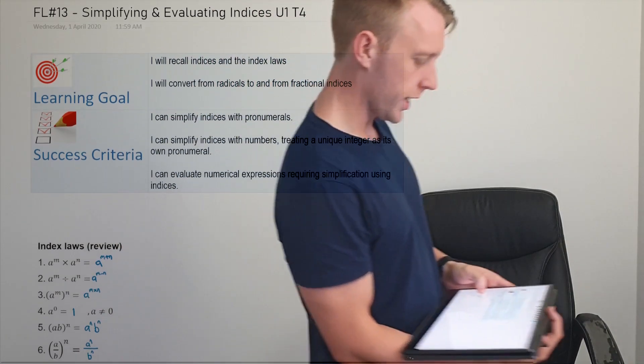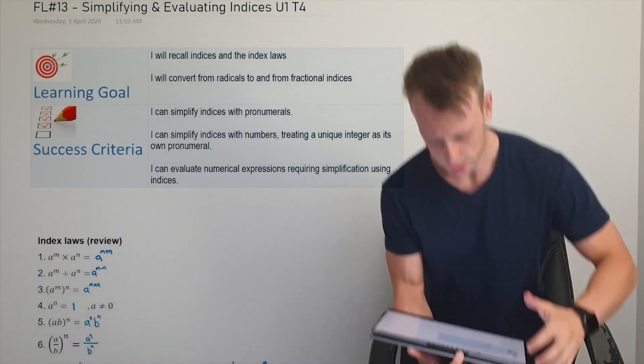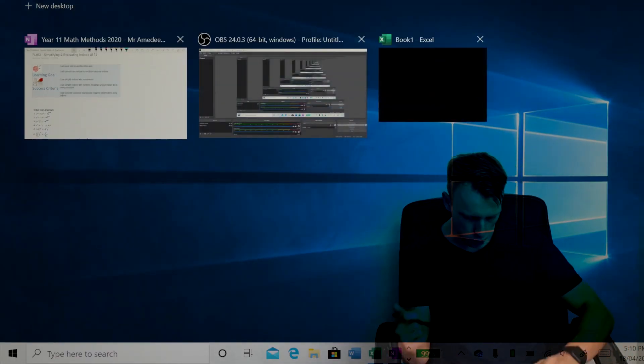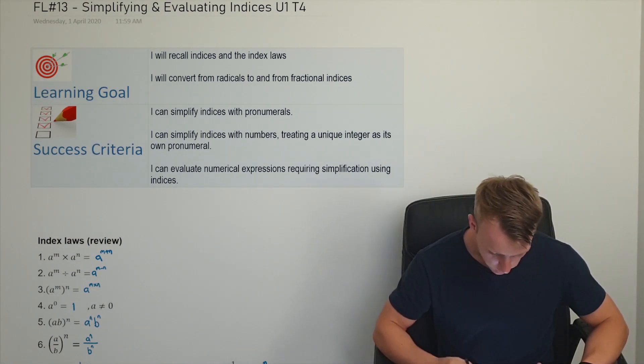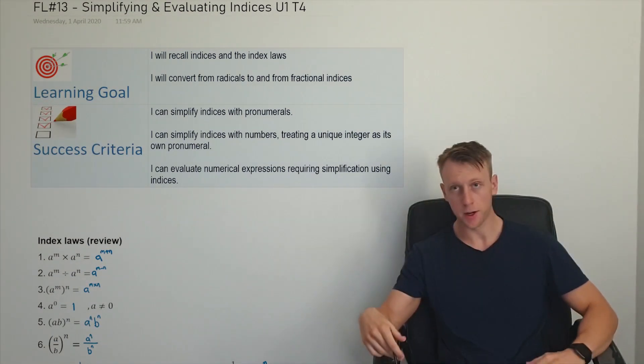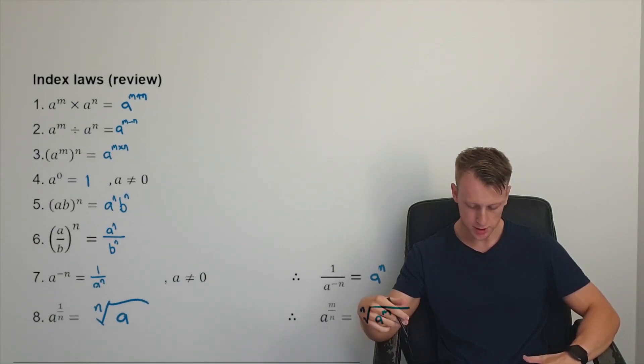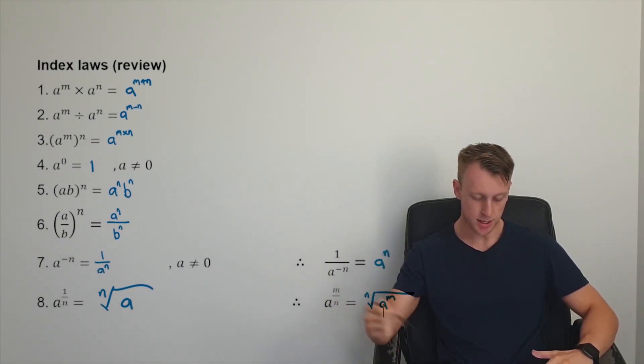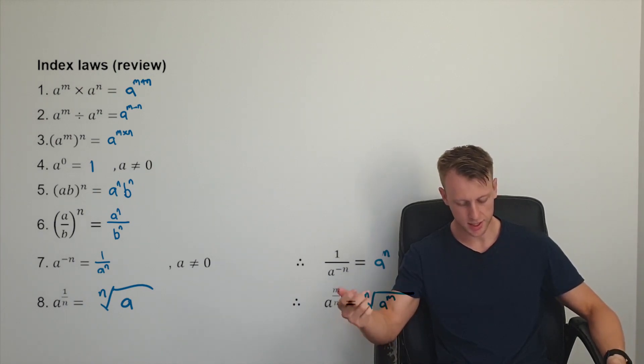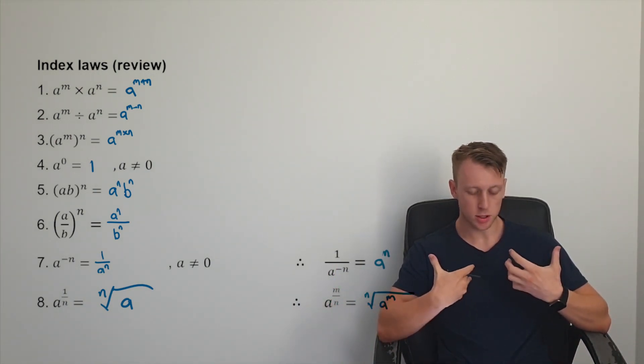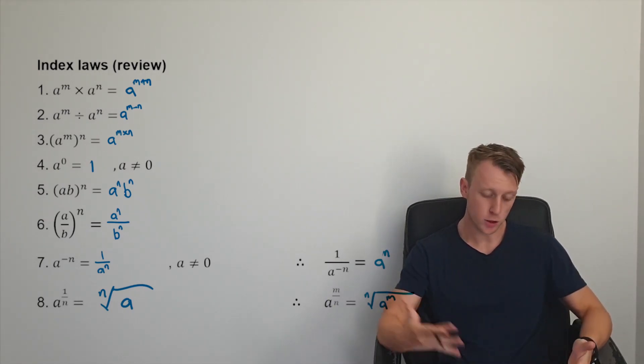All right, so we're just going to be looking at simplifying and evaluating some indices. So first of all, our learning goal is we're going to recall the index laws, which just have a little exhibit here. So we've got the first, second, third, fourth, fifth, sixth, seventh, and eighth index law. And I'm just going to go over the assumption that we've looked over those before.